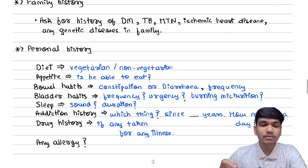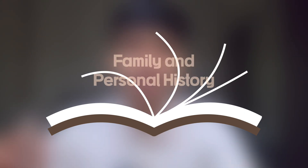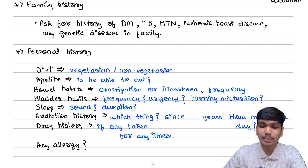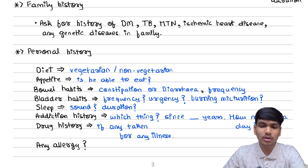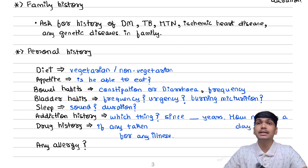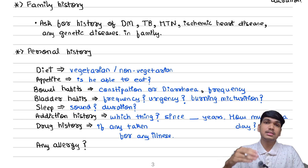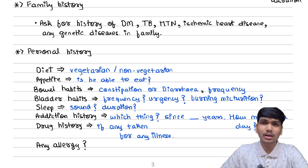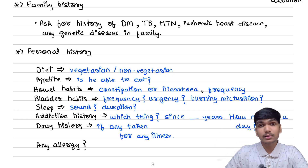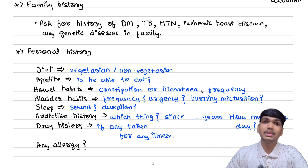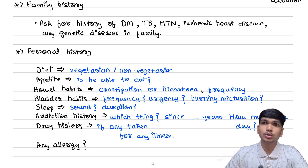Next is the family history. In family history, similarly, we have to ask for history of diabetes, hypertension, tuberculosis, ischemic heart disease, and any genetic disease in the family, because these play a significant role and can be transmitted genetically. So we shall ask for this history.